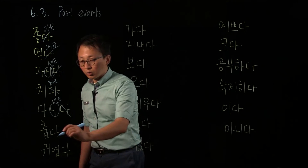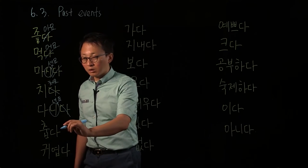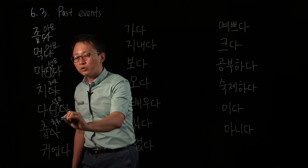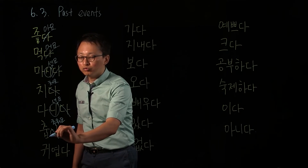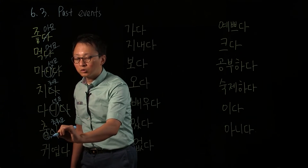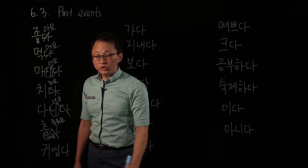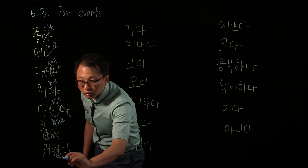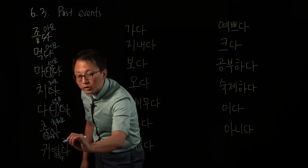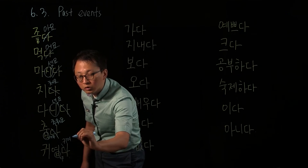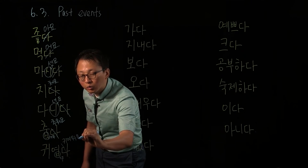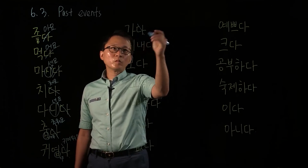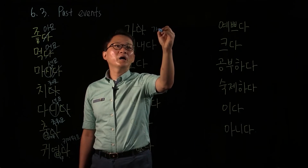춥다 means to be cold — this is an irregular word. The 어요 form? 추워요, right? So ㅂ changes into 우. This is the so-called 우 irregular form. 귀엽다 is the same — to be cute — changes to 귀여워요. And what about 가다? We don't need o or a. 가요.